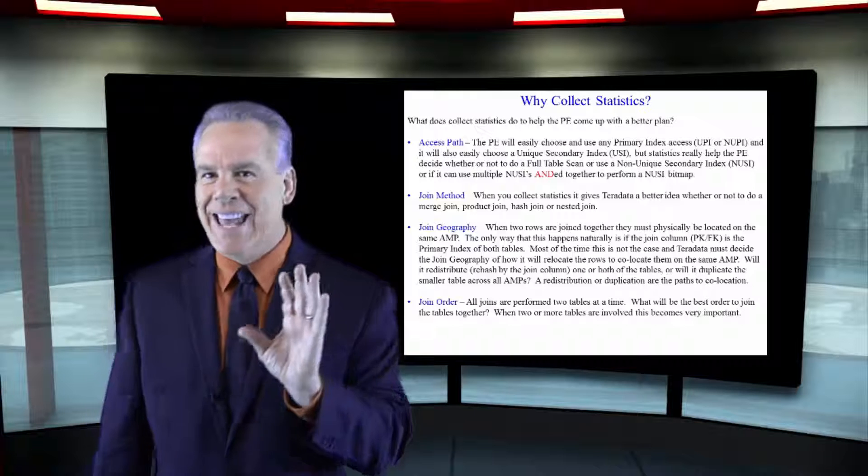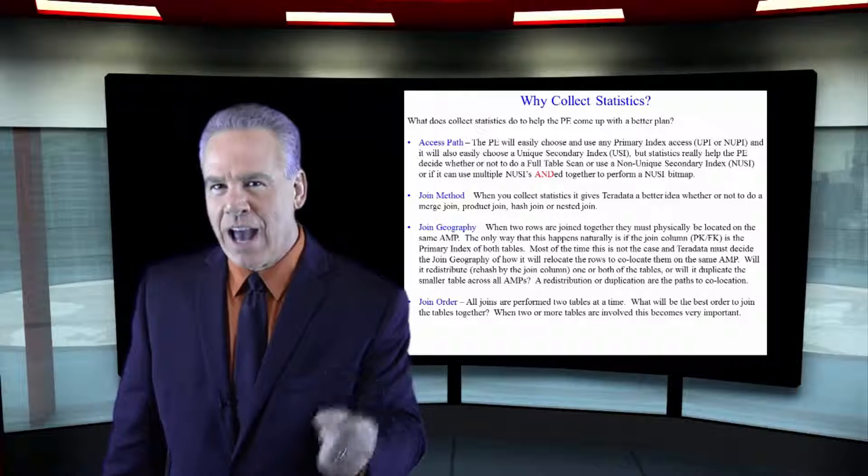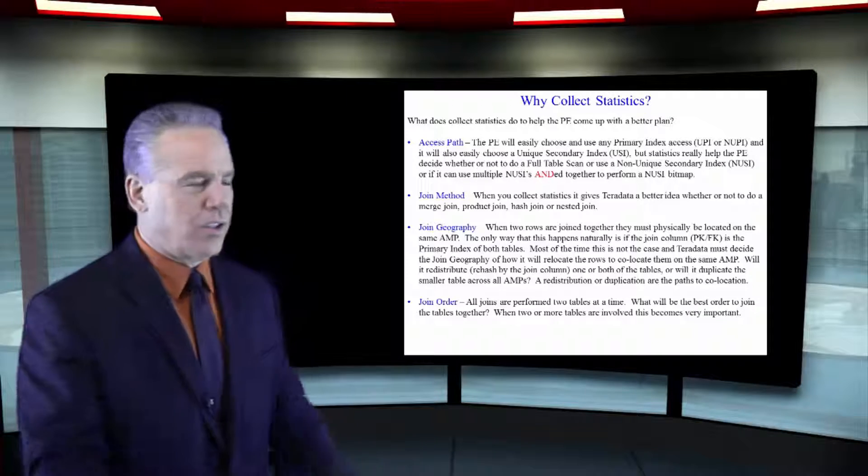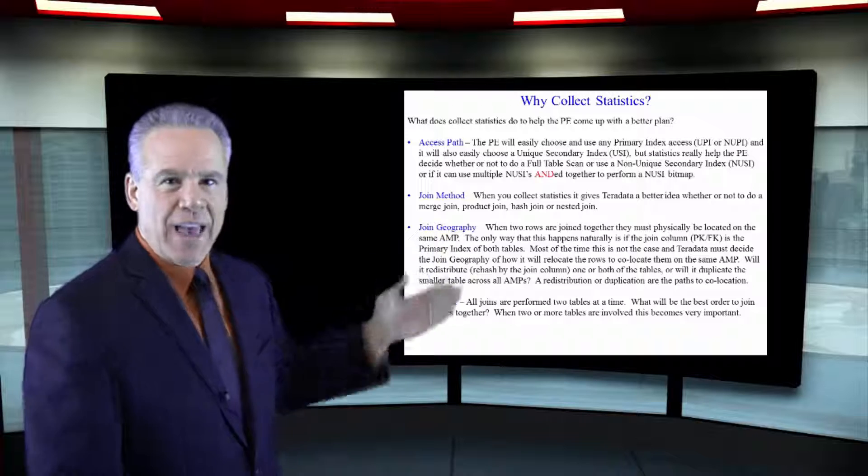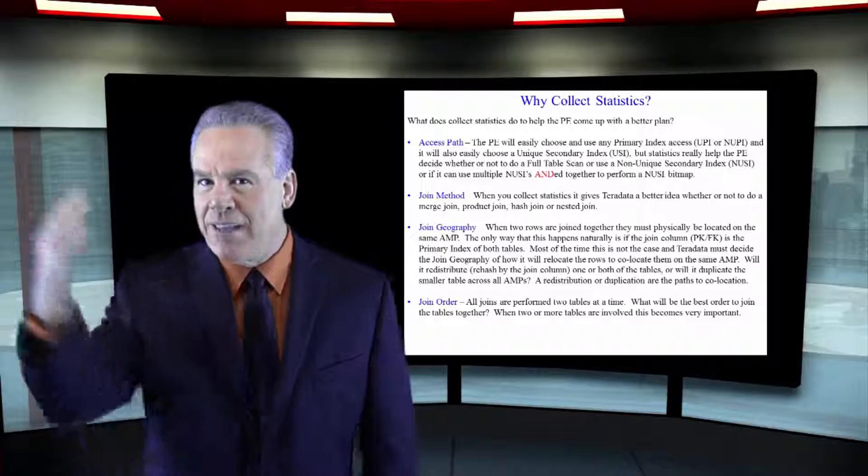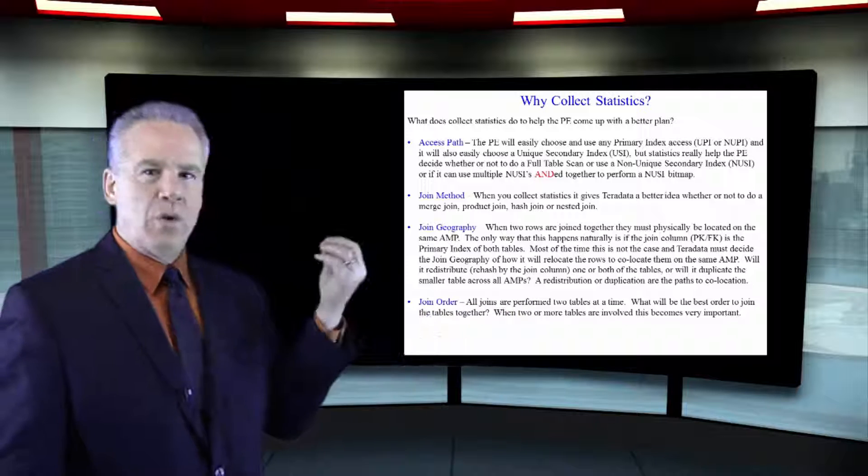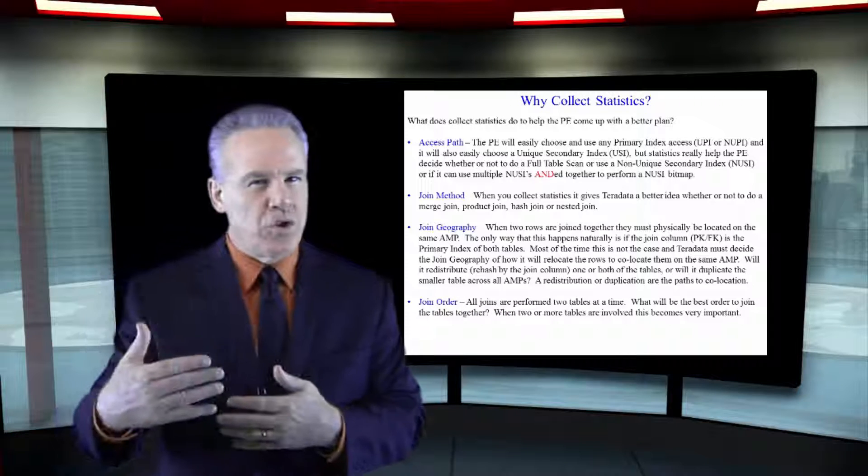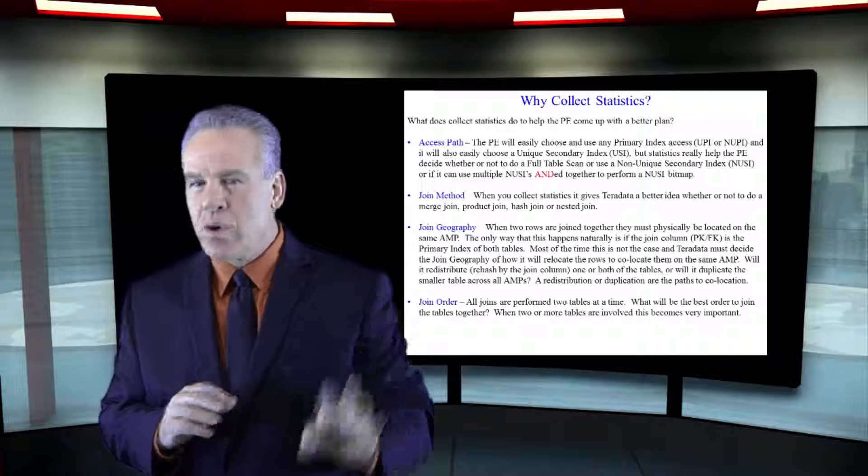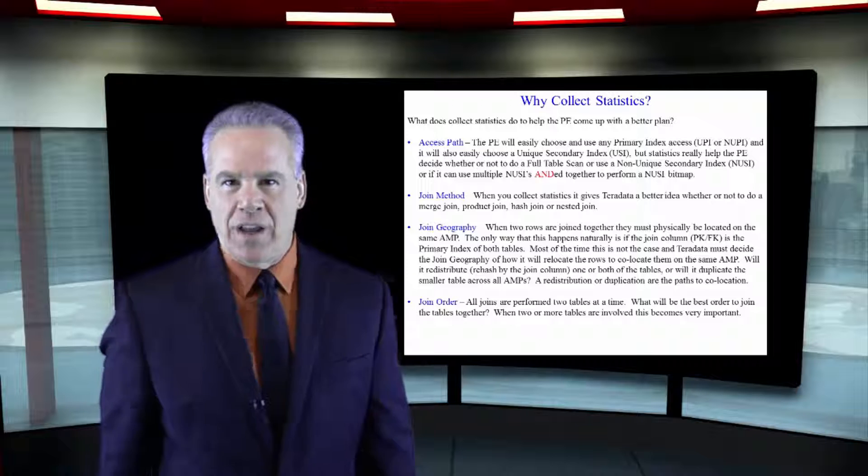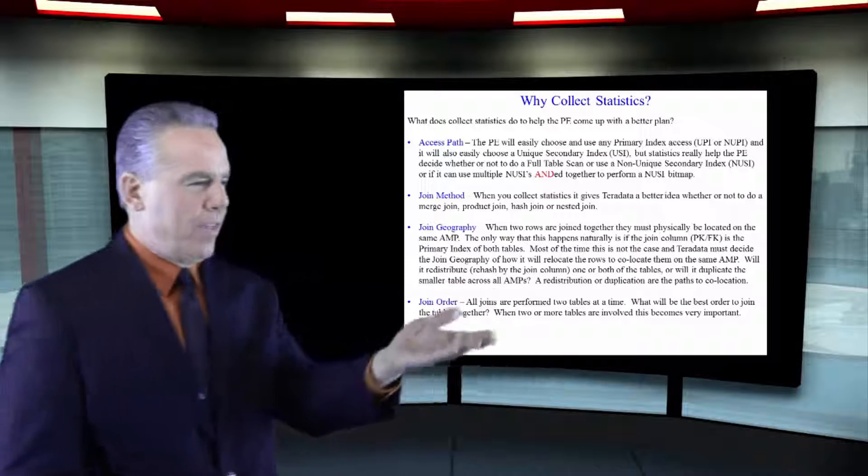When you collect statistics on any table, it's going to tell the optimizer a couple of things. What is the access path that I should use to best have the Amps get that data? How about join? Should I do a product join, a merge join, a hash join? So it has information on the best join method.